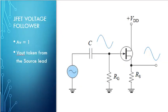JFETs can be used as a voltage follower. The gain will be 1, that's the definition of a voltage follower. Vout is taken from the source lead. Here's our source lead, Vout is coming from here.